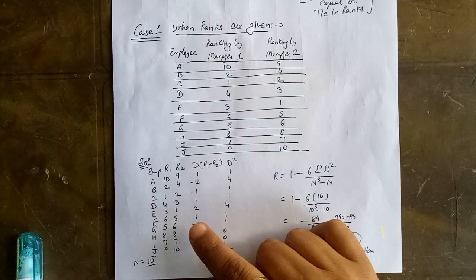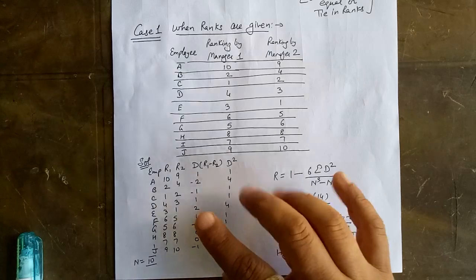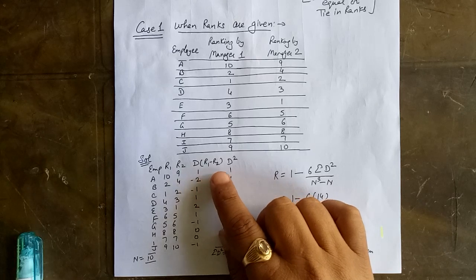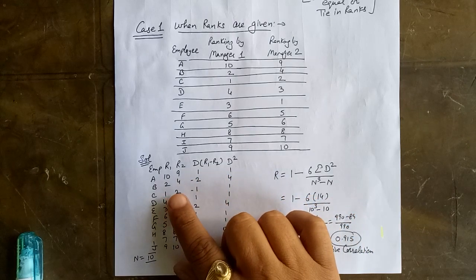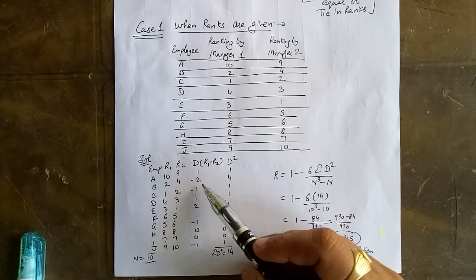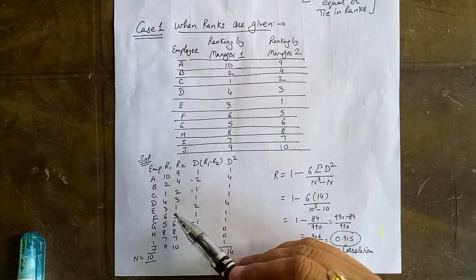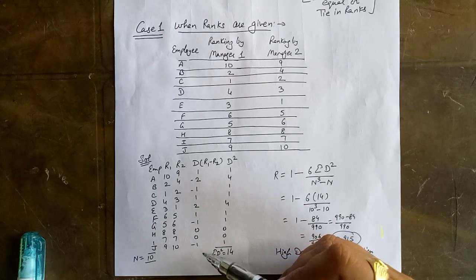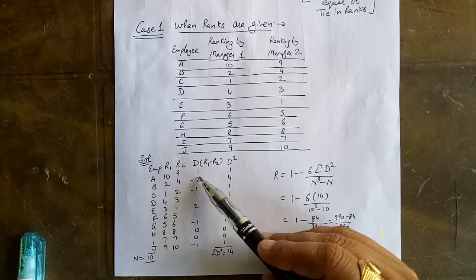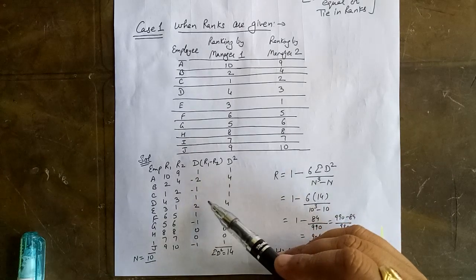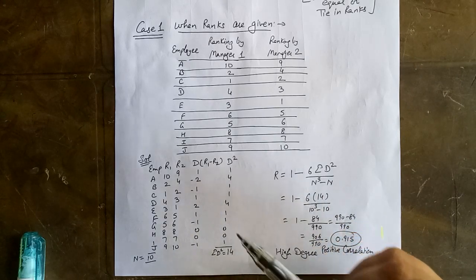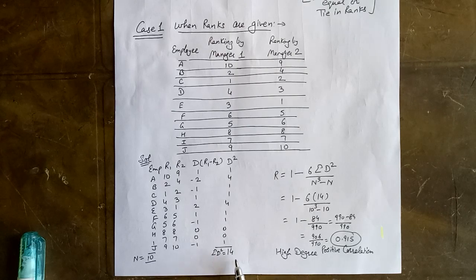To calculate D, we compute R1 minus R2 for each employee. So 10 minus 9 equals 1; 2 minus 4 equals minus 2; 1 minus 2 equals minus 1, and so on. After calculating D, we square each value: 1-squared is 1, (minus 2)-squared is 4, (minus 1)-squared is 1, and so on. The total sigma D-squared comes out to 14.